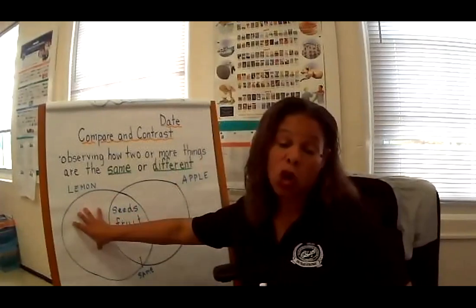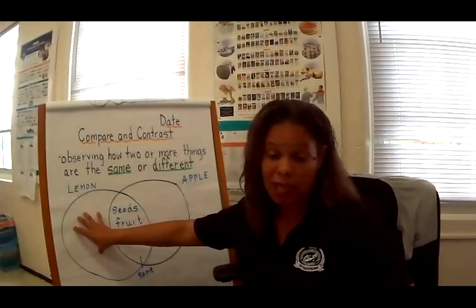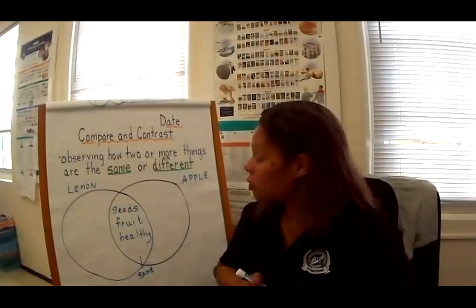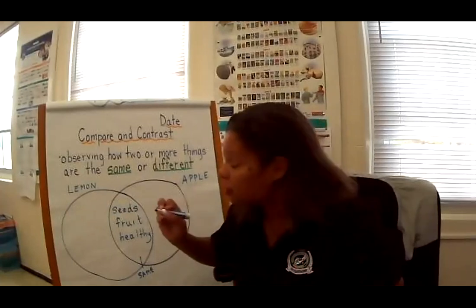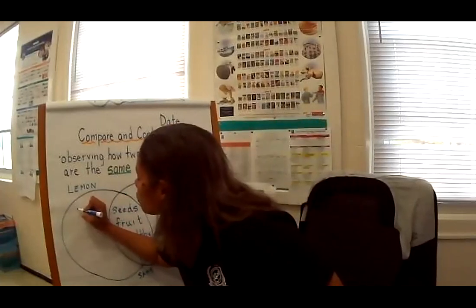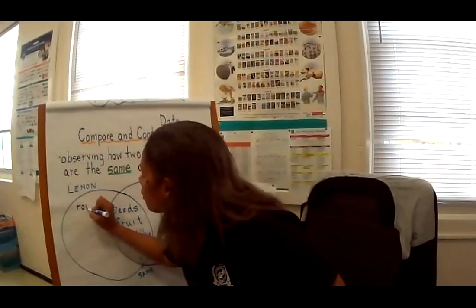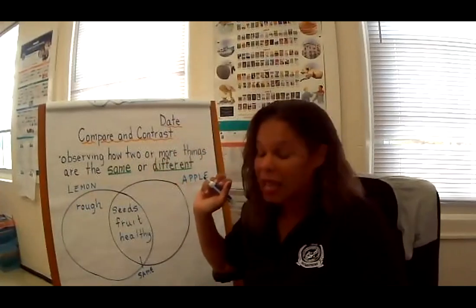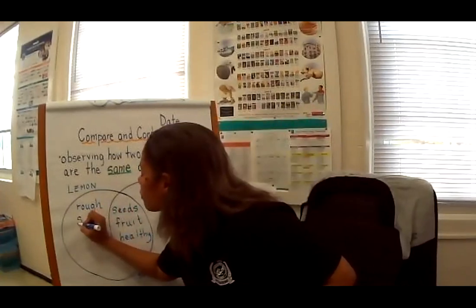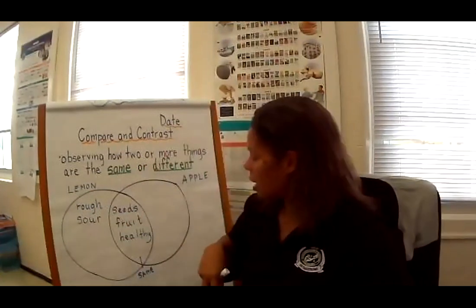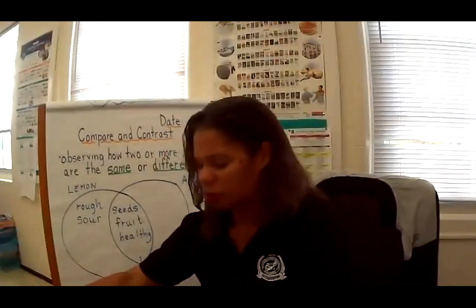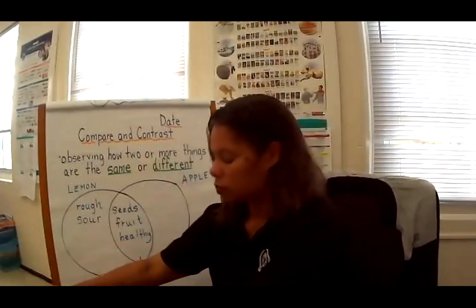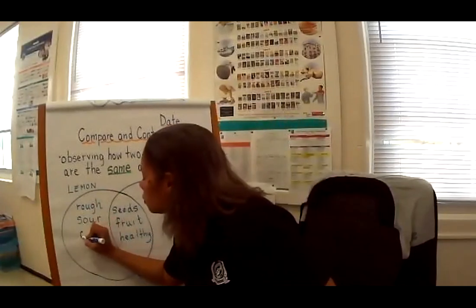In this section, we're going to talk about just the lemon — just details about the lemon. We said the lemon was rough skin, and we said the lemon was sour. And looking at the shape, it's almost like an oval shape.